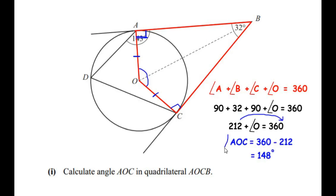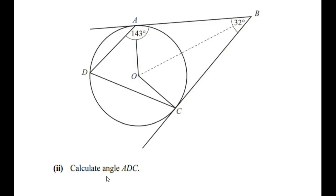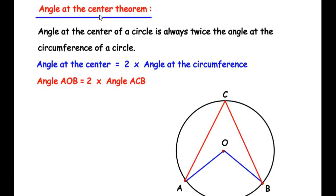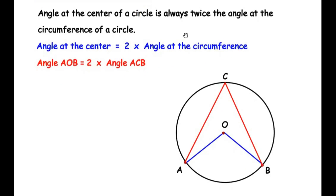We have found the value of angle AOC as 148 degrees. Now let us move on to the second sub-question: calculate the angle ADC. Before we begin solving this, let us understand the angle-at-the-center theorem. It states that the angle at the center of a circle is always twice the angle at the circumference of a circle.